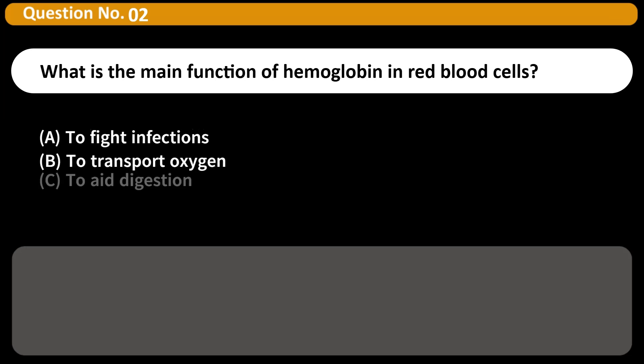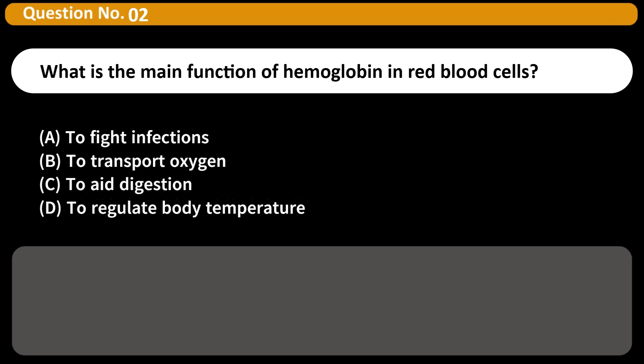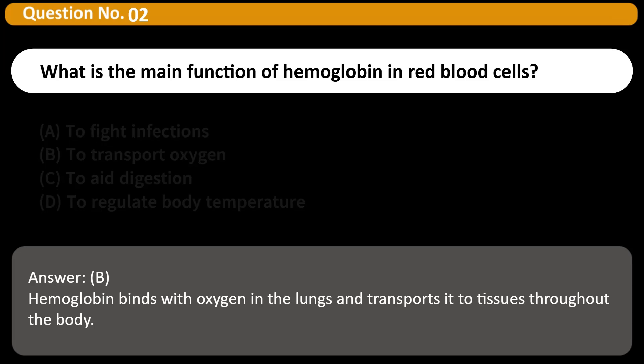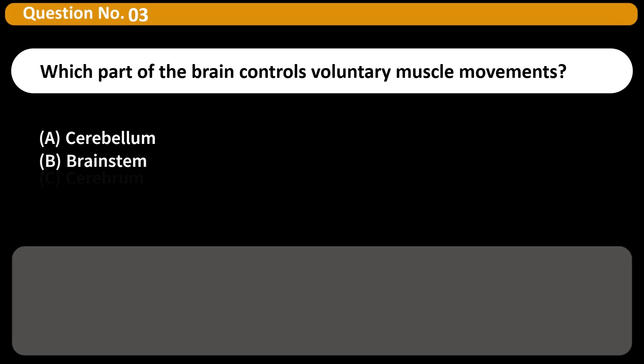What is the main function of hemoglobin in red blood cells? A) To fight infections, B) To transport oxygen, C) To aid digestion, D) To regulate body temperature. Answer: B. Hemoglobin binds with oxygen in the lungs and transports it to tissues throughout the body.